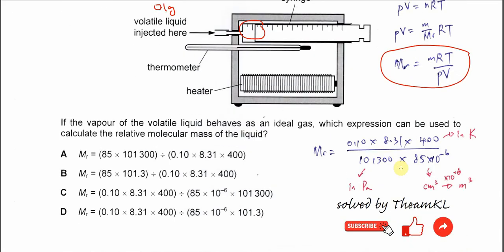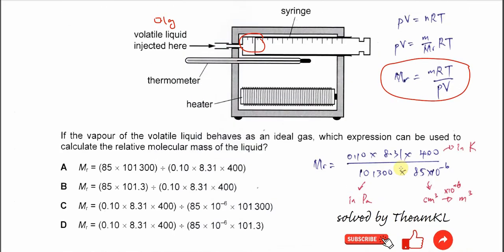So we substitute everything into this expression. The m here is the mass, so it's 0.1. This is the gas constant, 8.31. Temperature is 400 Kelvin.